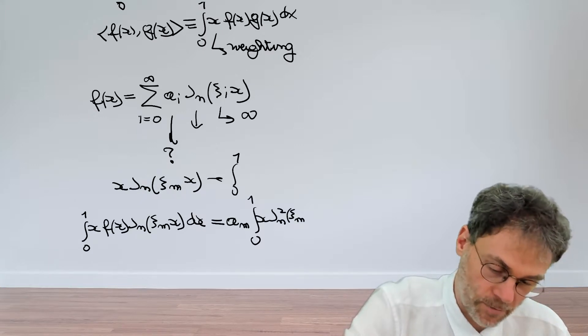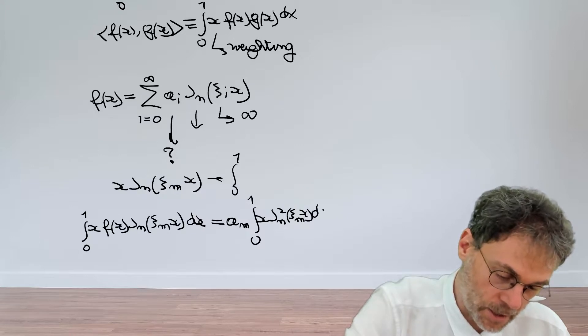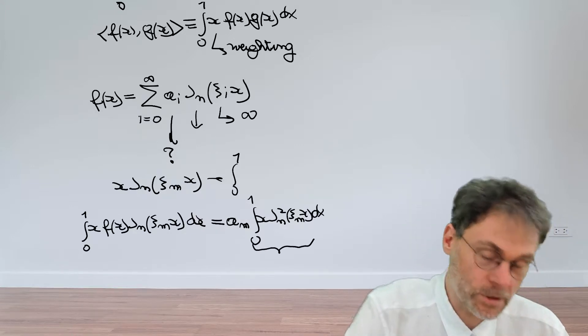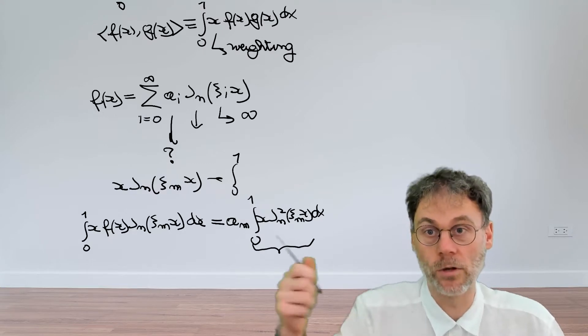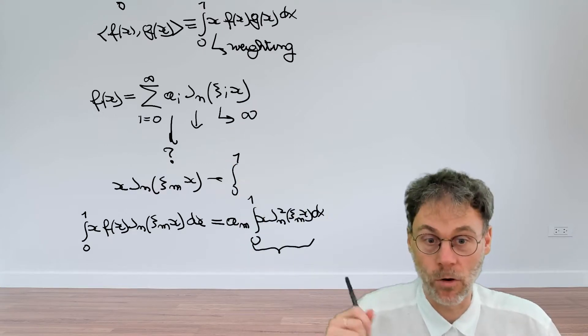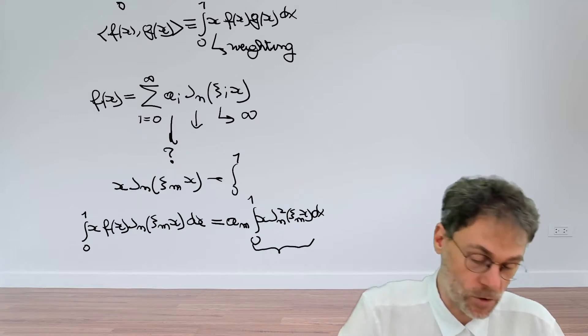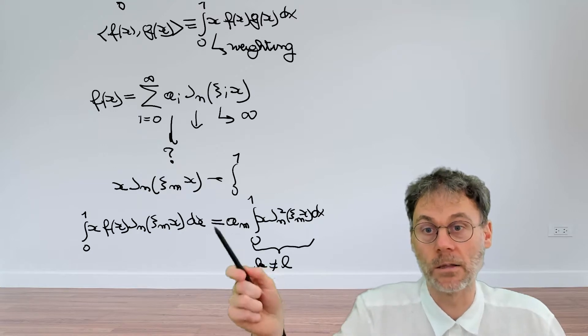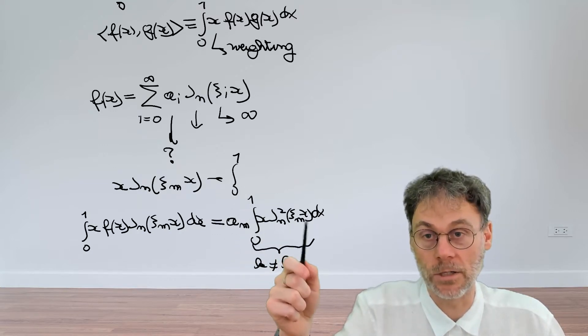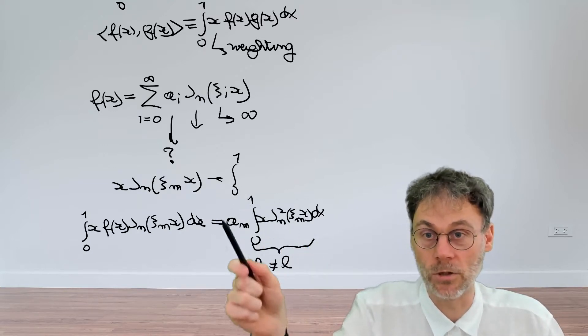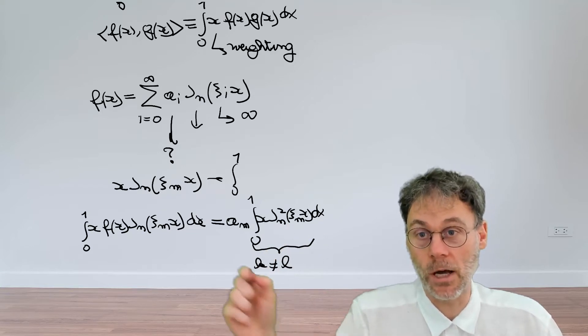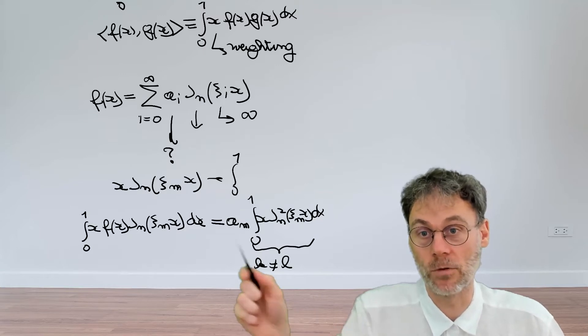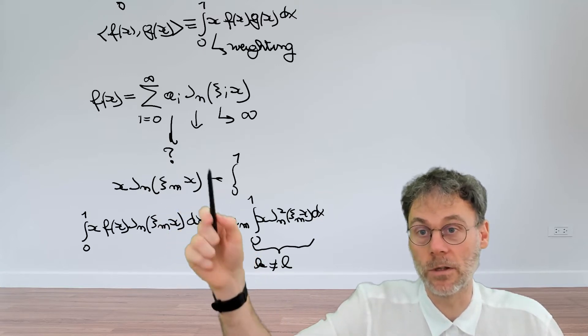So that's basically then the only term left: a_m times the integral from 0 to 1 of x J_n squared(ξ_m x) dx. And this particular integral is not governed by Lommel's integral, which we use to derive the orthogonality, because for Lommel's integral we really needed a situation where the k and the l, remember the scaling factors, were different. And in this particular integral they are the same. So this is the only term that does not vanish, and that gives you a nice explicit formula for one expansion coefficient at a time.